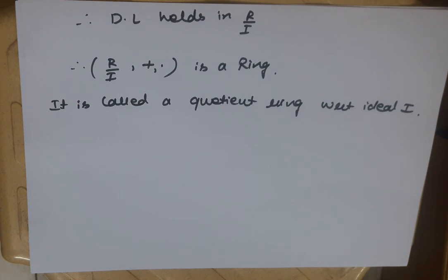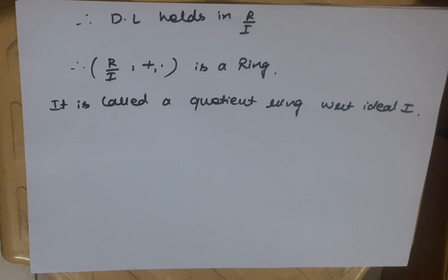Next video में हम discuss करेंगे कि अगर R के अंदर एक specific condition satisfy हो रही है, तो उसका R/I पर क्या effect होगा — जैसे अगर R commutative है, या R में unity exist करती है। इस तरह से हम different properties of R/I, with the help of properties of R, discuss करेंगे। उसके बाद characteristic of a ring topic आएगा। अगर आपको यह video पसंद आया तो like करें और Learn Math Easily channel को subscribe करना न भूलें। Thank you so much for watching.